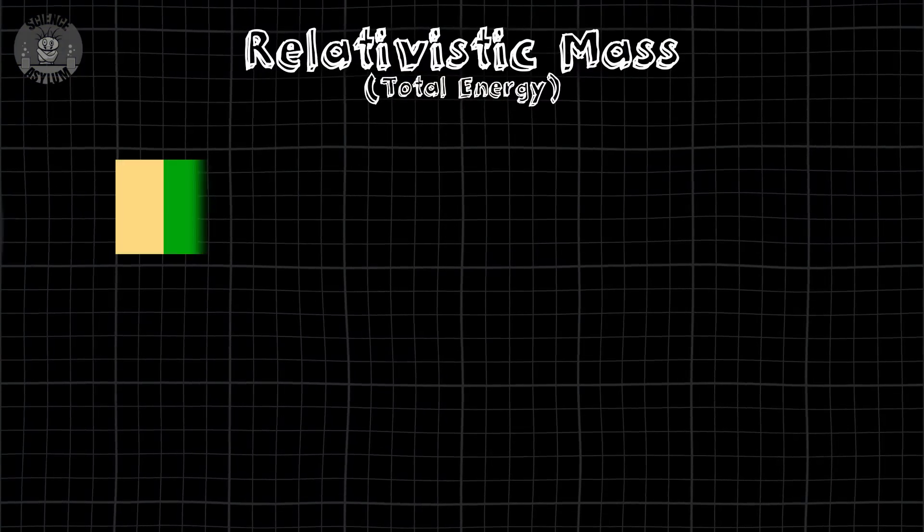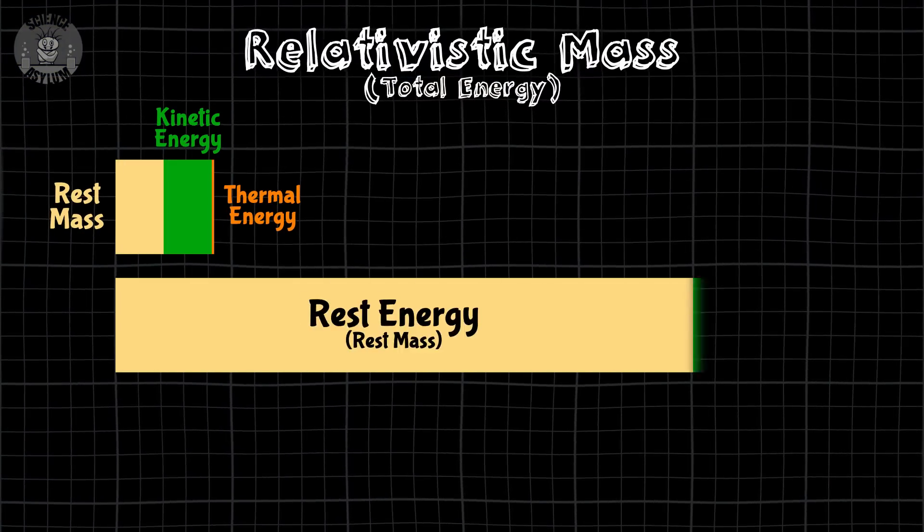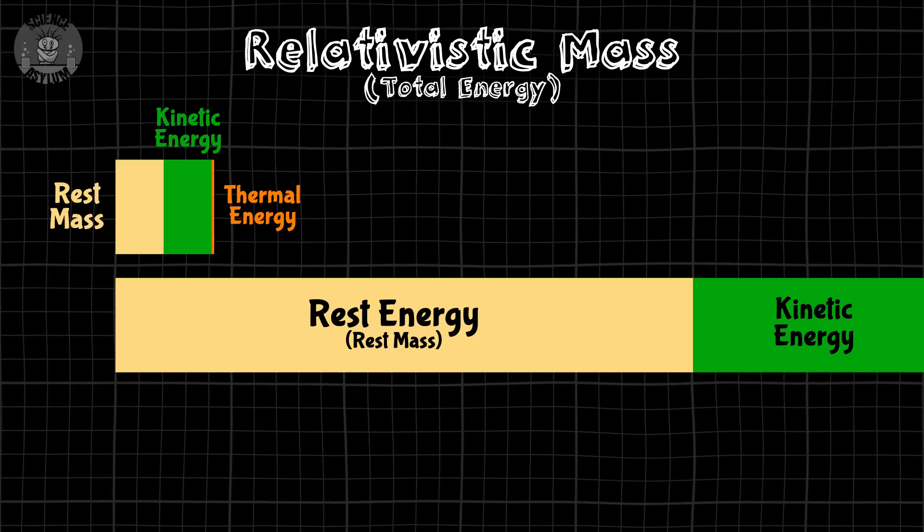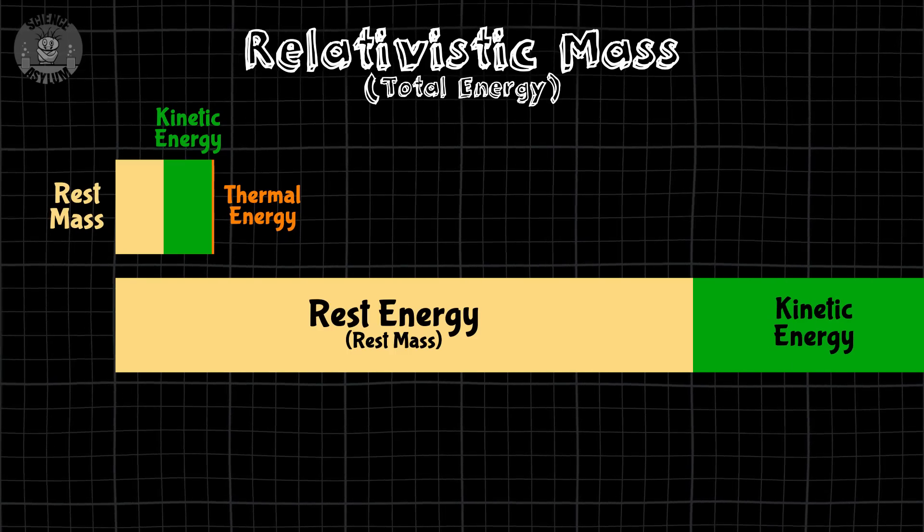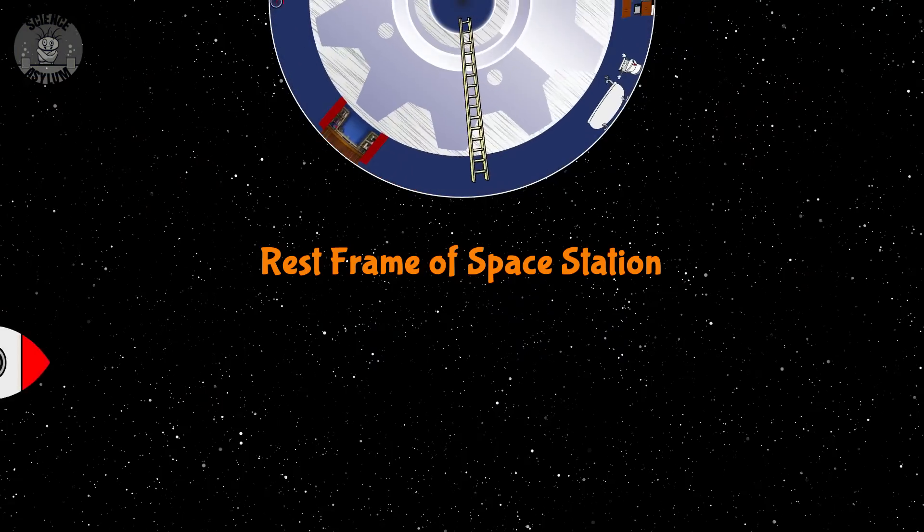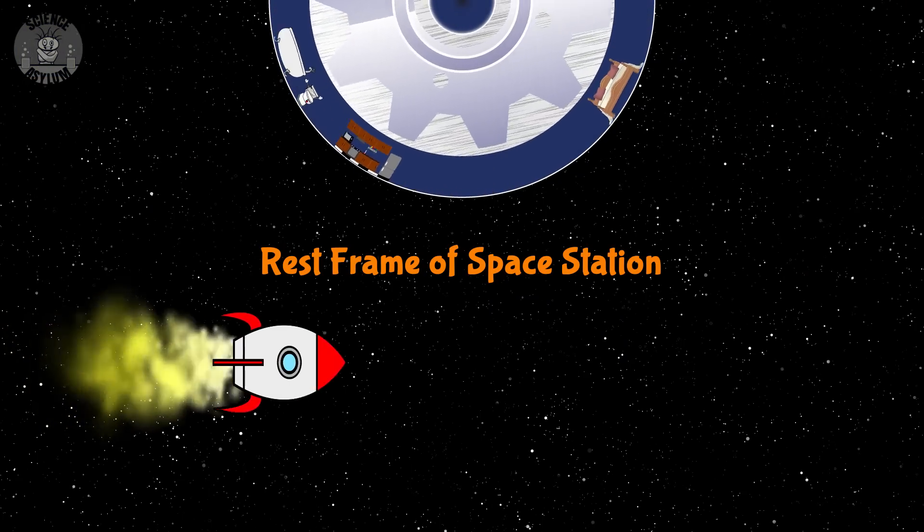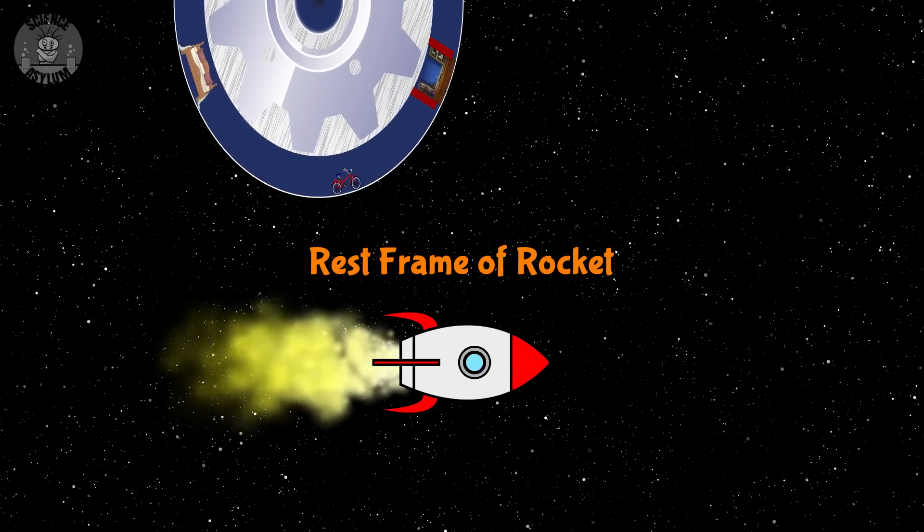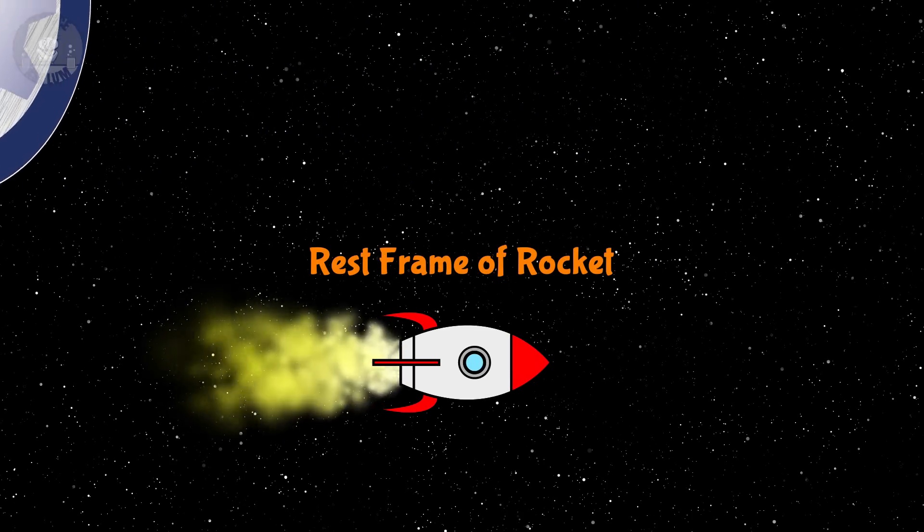If something is small enough or moving fast enough, kinetic energy can noticeably contribute to overall mass. There are even things that don't have any rest mass at all. In order for something to have rest mass, it must have a rest frame. There must be a frame of reference where it is at rest or stationary.